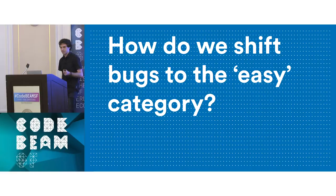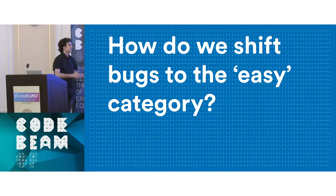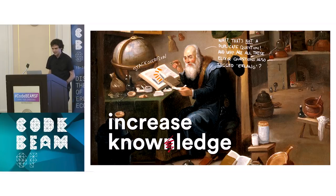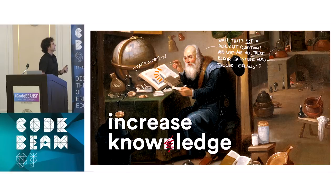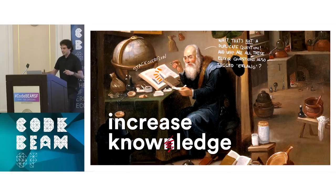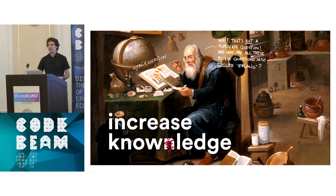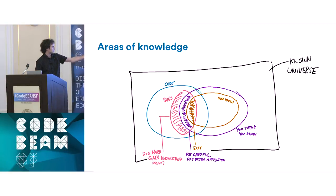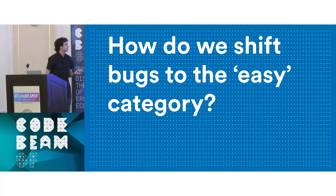The kind of plan is: how do we shift most bugs to the easy category so that they are simple to fix and easy to see coming? The simplest way is to increase the knowledge we have about our system. The really easy one is just to hire more senior developers — you don't necessarily go wrong with them. Senior developers tend to know more, at least in the area related to the code.